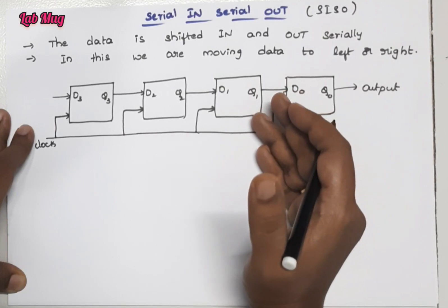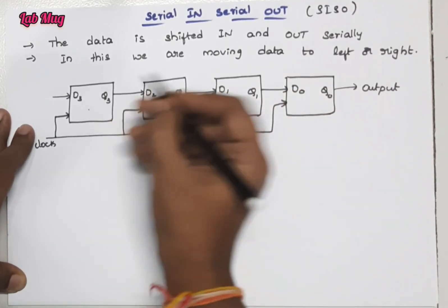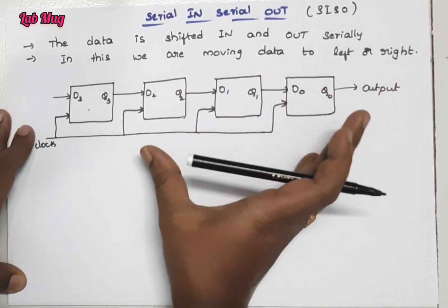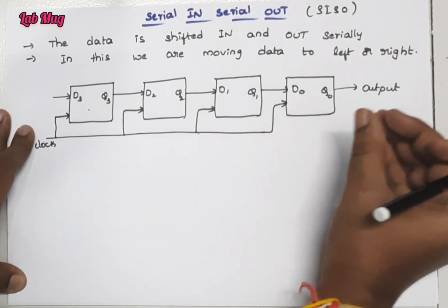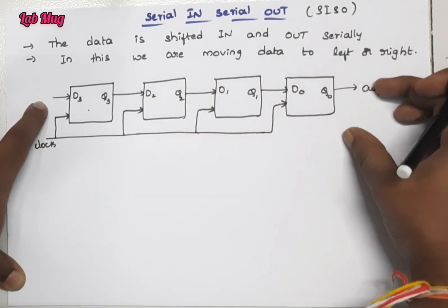Here we are taking four flip-flops. For example, this is flip-flop one, flip-flop two, flip-flop three, and flip-flop four. Each flip-flop is combined with one another. The input is given from here and continuously passing the values, and finally the output is getting from here.